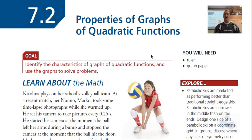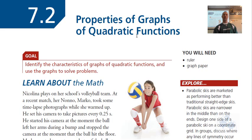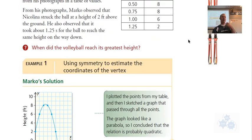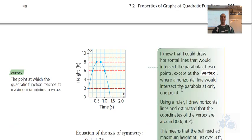Foundations of Math 27.2, Properties of Graphs of Quadratic Functions. We just took a look at 7.1, and I mentioned a couple things we're going to learn here in 7.2. A quadratic function is shaped like a parabola — it can either open up or down. There is a maximum point for a parabola that opens down, and a minimum point for a parabola that opens up.